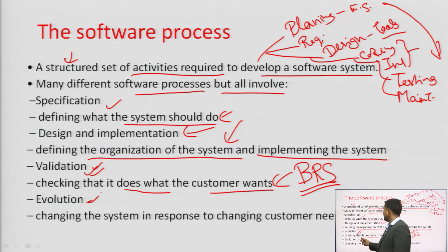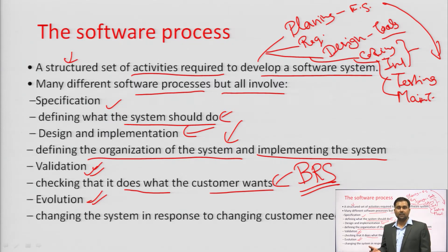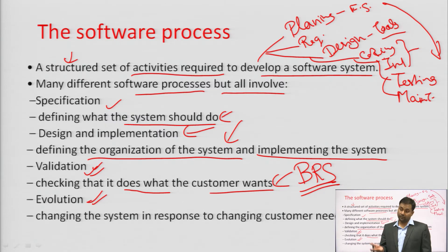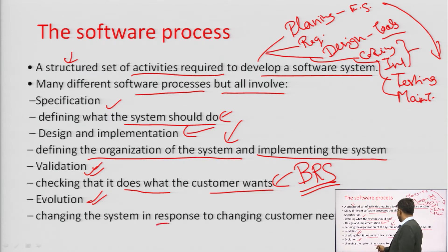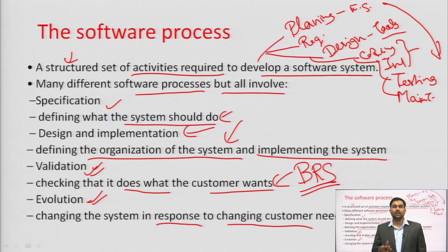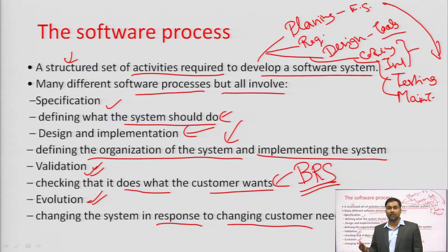Evolution means we need to change and respond to changing customer needs. For example, a new Android version is coming — is our software compatible? New versions of Java, Python are releasing. 5G is arriving — will our software run on 5G, 4G, or 3G? Our development process must respond and adopt changes according to customer needs. These are the processes of software development.